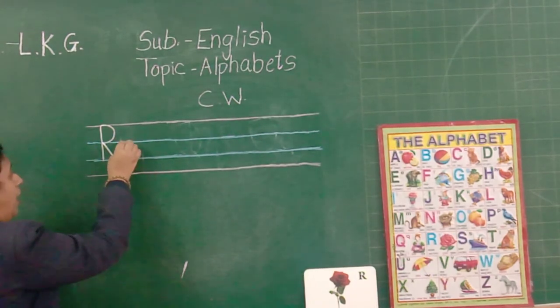Look here. How to write small r. Standing line, curve up, and small curve.